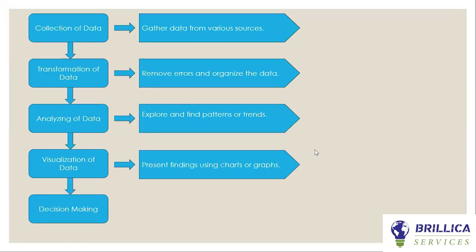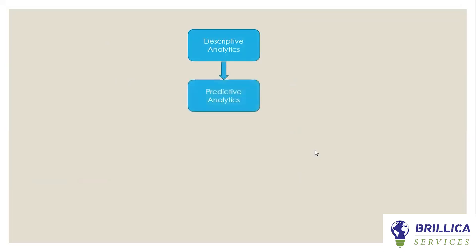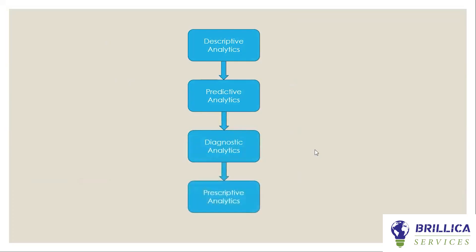Once the data is converted into graphs and charts, we can take better decisions for business growth. Now let's talk about the types of Data Analytics. Number 1 is Descriptive Analytics. Number 2 is Predictive Analytics. Number 3 is Diagnostic Analytics. Number 4 is Prescriptive Analytics.